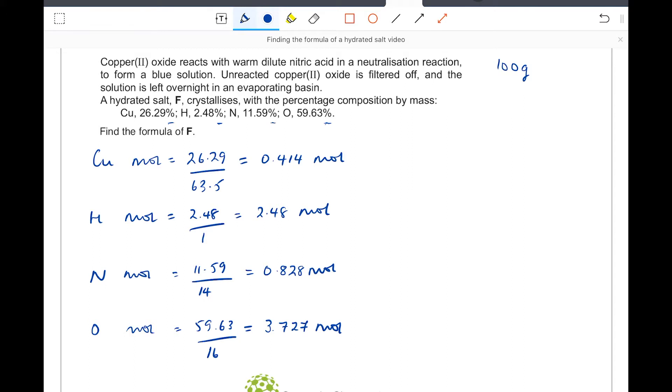Formulas are ratio, so the next thing we need to do is to put this into a ratio that looks more familiar, i.e., whole numbers. That would be a good start. So we've got copper to hydrogen to nitrogen to oxygen: 0.414, 2.48, 0.828, 3.727.